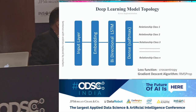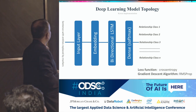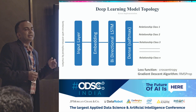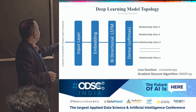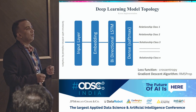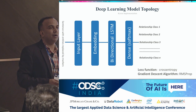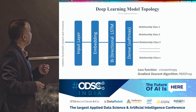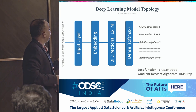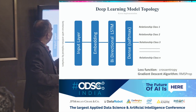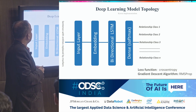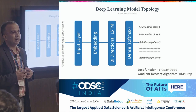This is an elaborate topology of the deep learning model. We basically take the sentences, replace the entities with markers, then pass it through an input layer, then an embedding layer which transforms words into a vector space representation. We pass that into a bidirectional LSTM, then into a dense layer with a softmax activation function. We use cross entropy as the loss function, and what you see at the end are the different relationship classes.